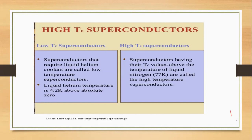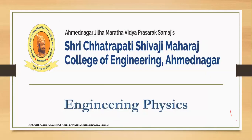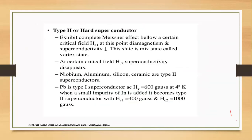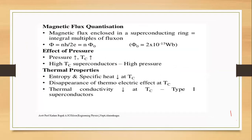The most important property, already learned in the first lecture, is the Meissner effect. The Meissner effect means that if a superconductor is cooled in a magnetic field down to the critical temperature, then the magnetic field lines are pushed out of the body of the superconductor. This effect is called the Meissner effect.